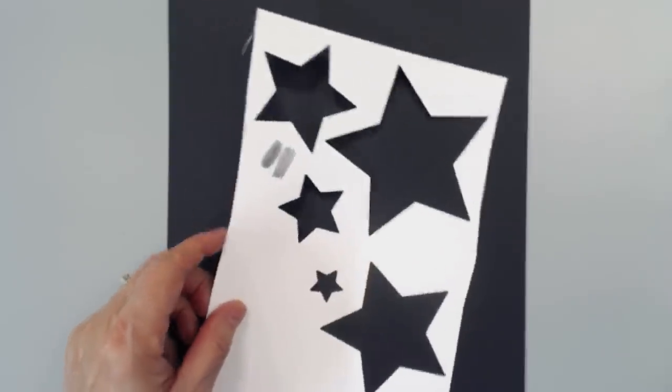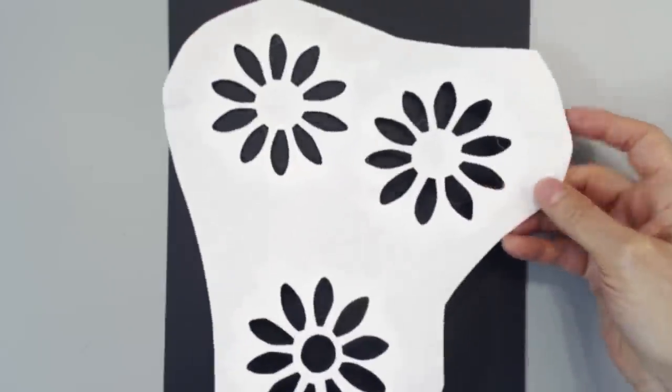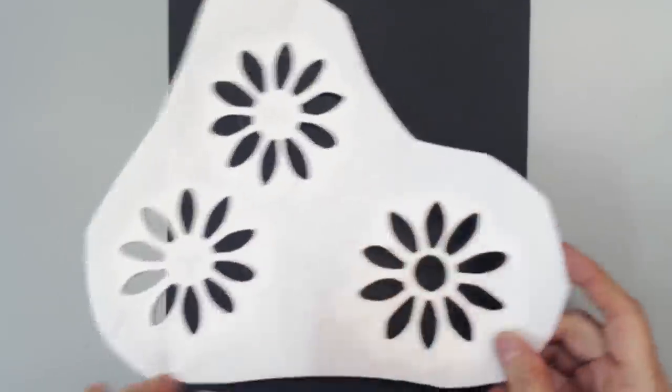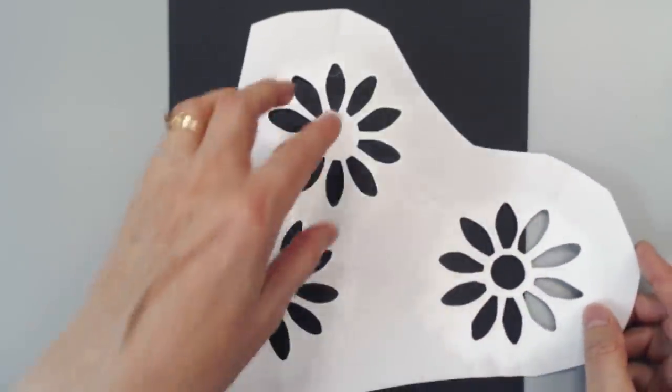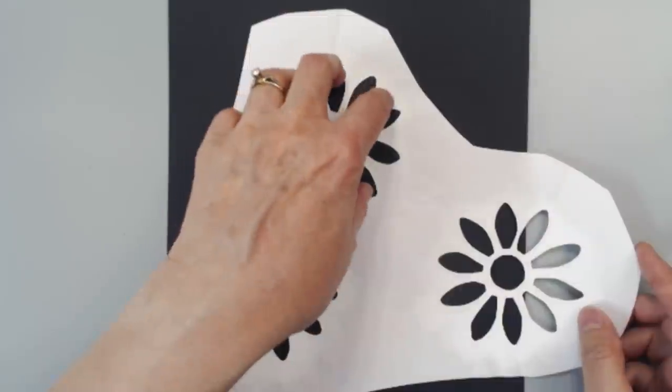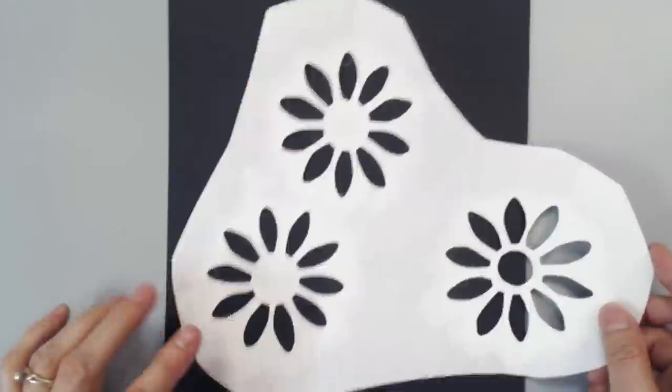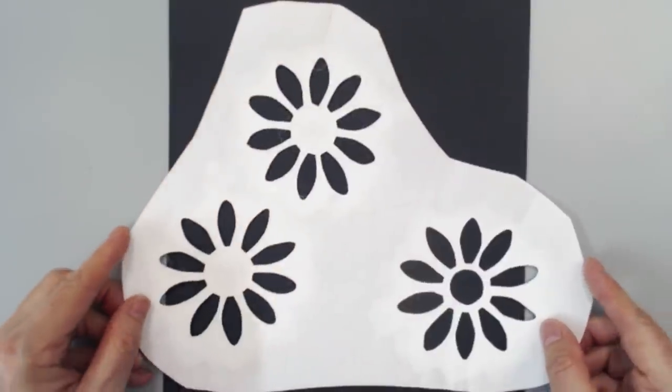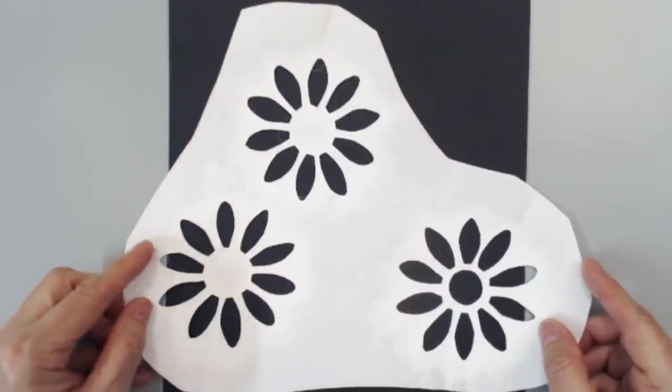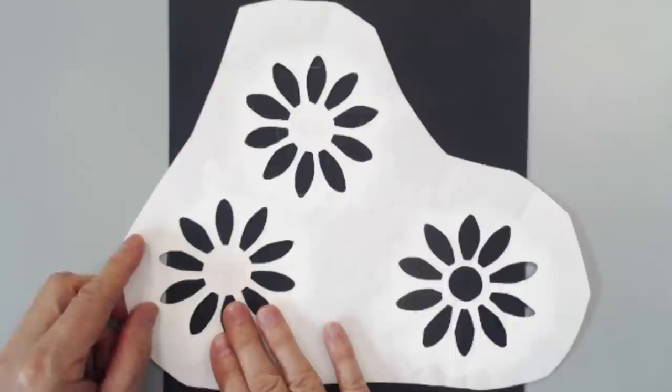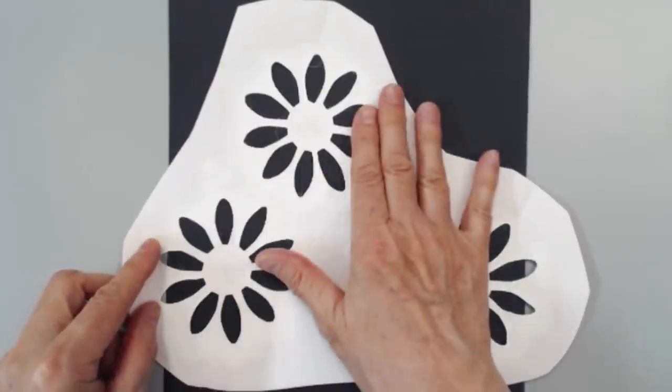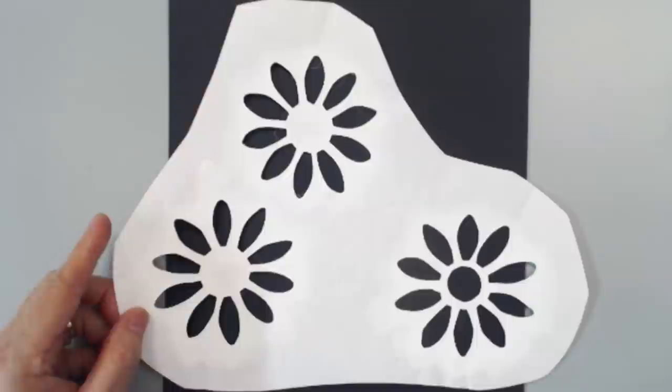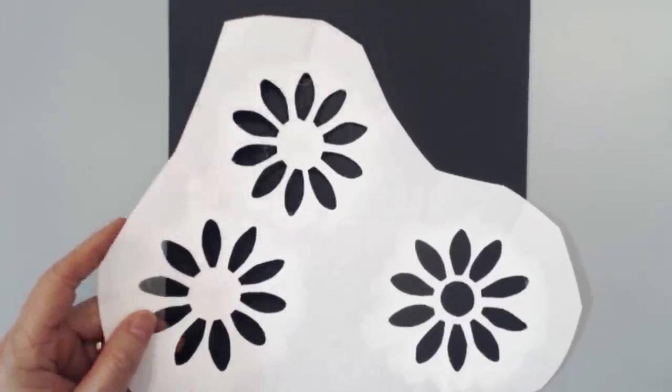Another material you can use to cut your own stencils is freezer paper. And that's what this is. So this is a couple of layers of freezer paper that I ironed together. And then I used a foam stamp. I stamped it on my freezer paper and then cut out the shapes with a craft knife. And then that makes, I mean, it's not a stencil that's going to last forever, but it does a pretty nice job for scraping gesso or texture paste and that kind of thing through for an art journal page or whatever.